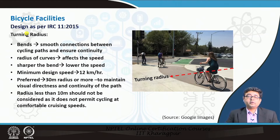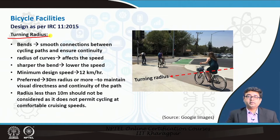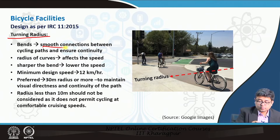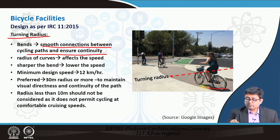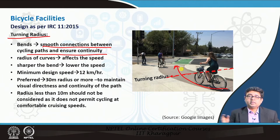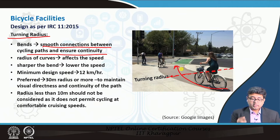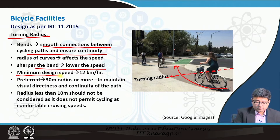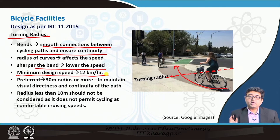The next design element for cycling infrastructure is the turning radius of the bicycle track or shared-use path. Bends should be smooth connections between cycling paths to ensure continuity. They depend on the turning radius — approaching at a certain speed, bends restrict speed by some amount. It is recommended that a minimum design speed of 12 kilometers per hour be maintained at all bends.